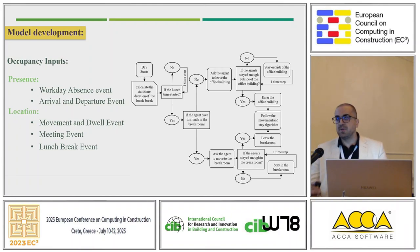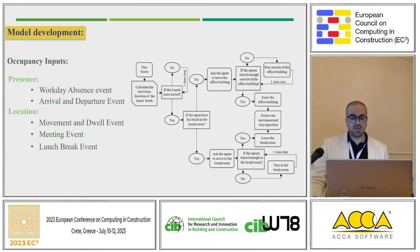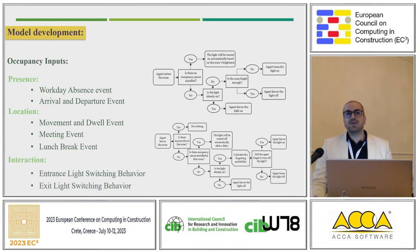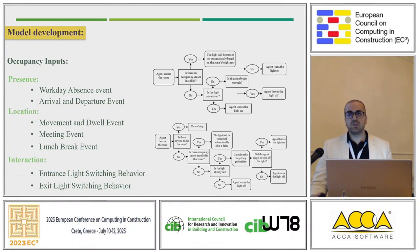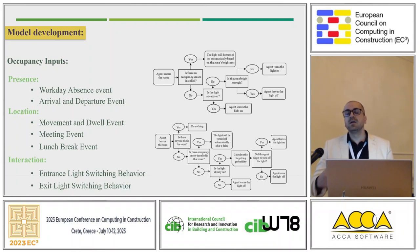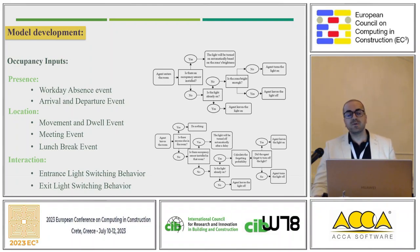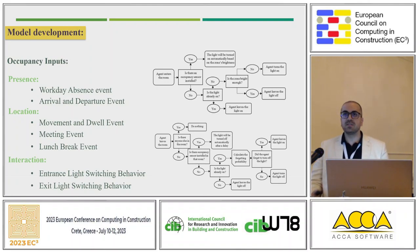The third input is interaction. For this problem, we focus on the interaction of occupants with lights. We developed two algorithms: the entrance light switch, when someone enters a room and turns on the lights, and the exit light switch. If there are occupancy sensors, the lights turn off automatically. If there are no occupancy sensors, the occupants have a chance to forget to turn off the lights when leaving the room.